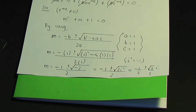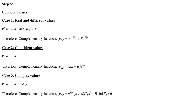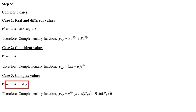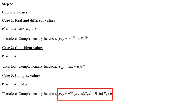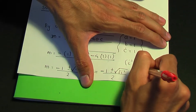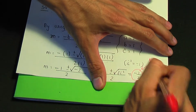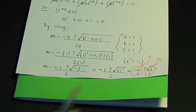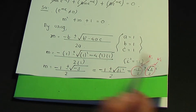Going back to our three cases, it's not case 1 (real and different values) nor case 2 (coincident values). It's case 3: complex values. For values of the form k1 ± k2·i, the complementary function is e^(k1·x)(a·cos(k2·x) + b·sin(k2·x)). Here k1 = −1/2 and k2 = √3/2.